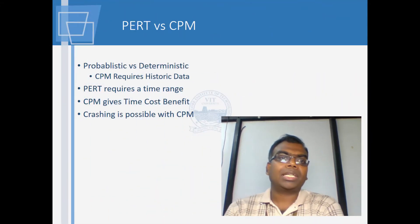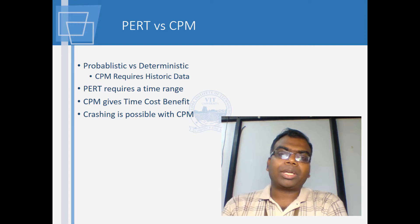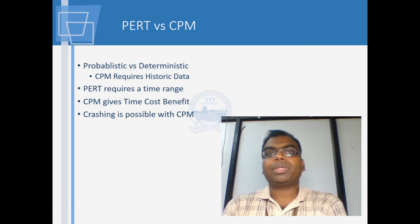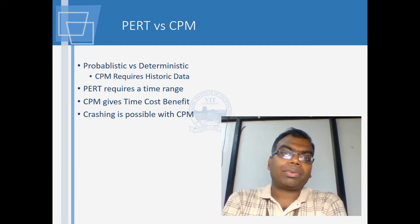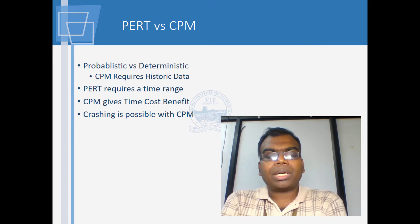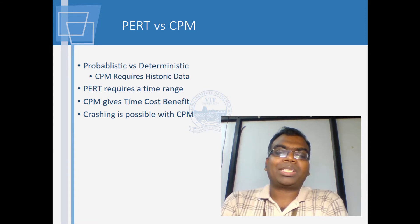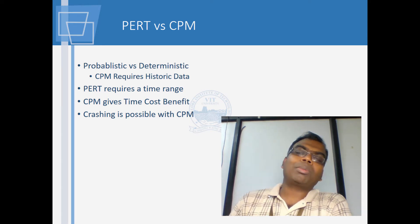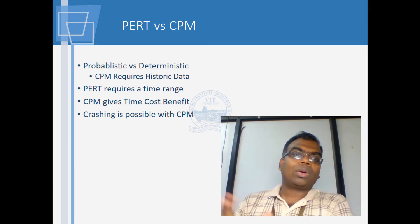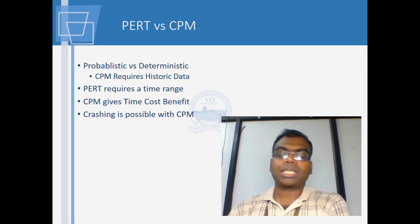PERT is Program Evaluation and Review Technique. The difference between the PERT and CPM approaches is that CPM is highly deterministic. We cannot create a CPM network without having a fair idea of the time required for various activities. However, in PERT you have a cushion in this aspect — we make it probabilistic, factoring in how probable it is that work starts or finishes at a given time.